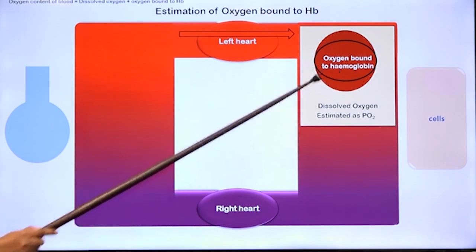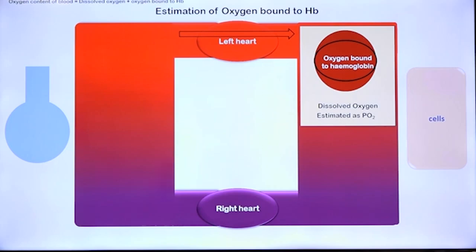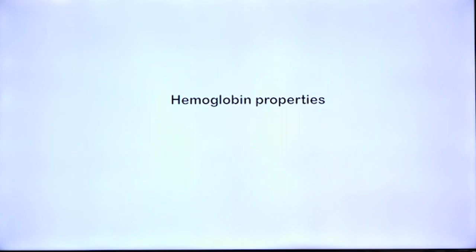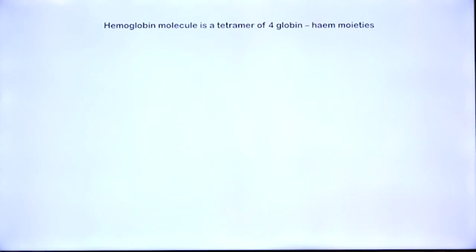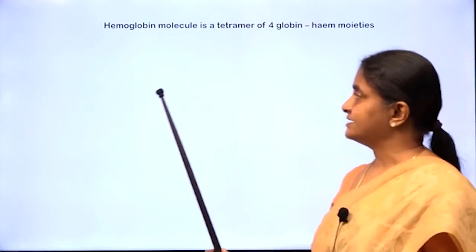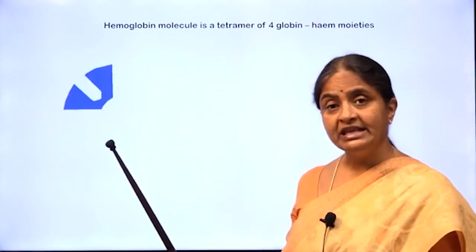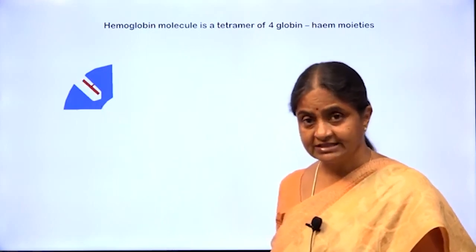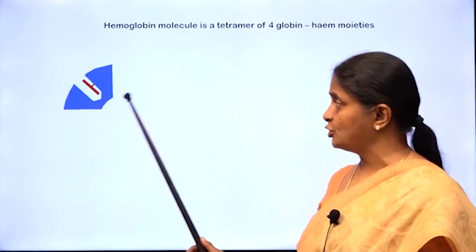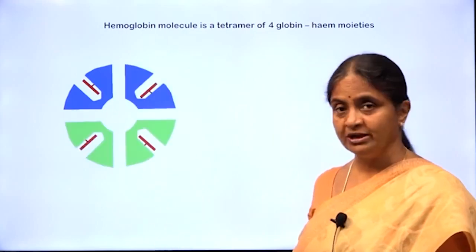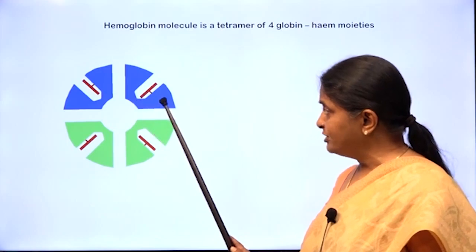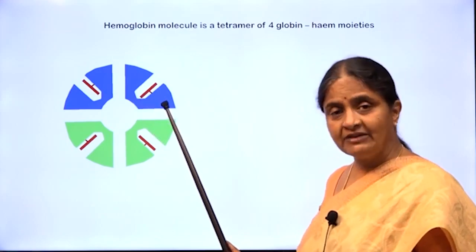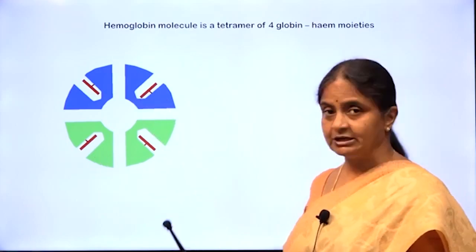We will now see how to estimate the amount of oxygen bound to hemoglobin. Prior to that, we look at properties of hemoglobin in brief. Hemoglobin is a tetramer of four globin-heme moieties — two alpha globin chains and two beta globin chains. Each globin moiety has an associated heme group to which molecular oxygen binds at the iron.